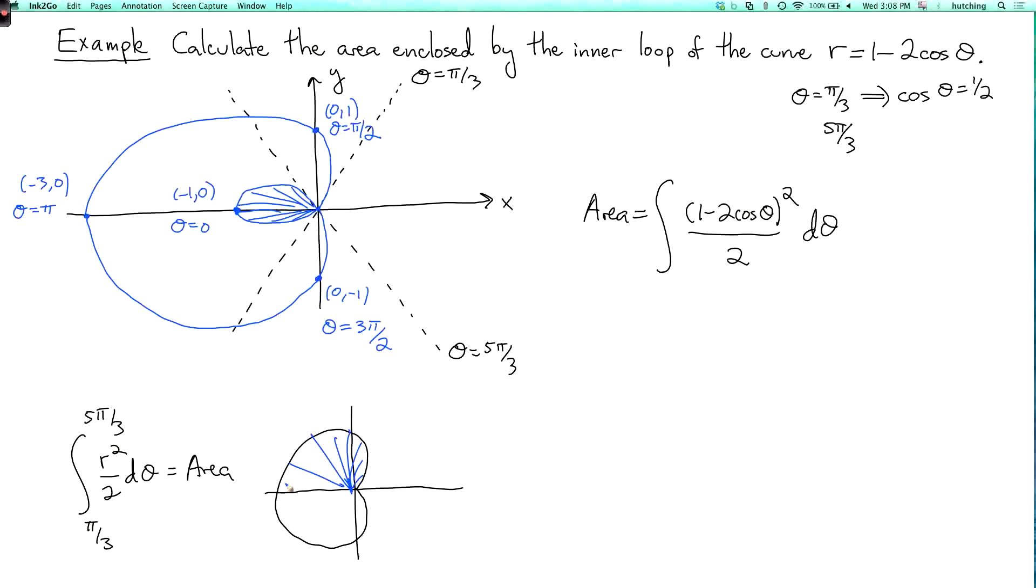So you get the area of this entire region. That's the whole region bounded by the outer part of the curve. And that's not what we want. I just want the inner region. And you could say, well, maybe we should integrate from 5 pi over 3 to pi over 3, but that will just give you minus this area, which is also not what you want.